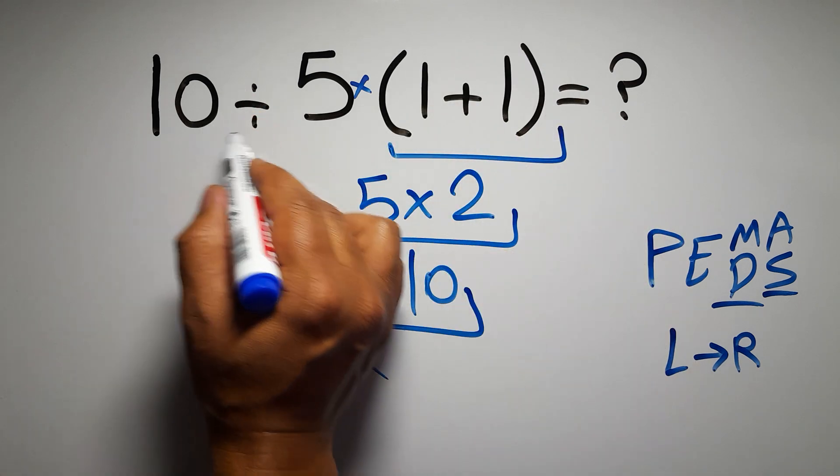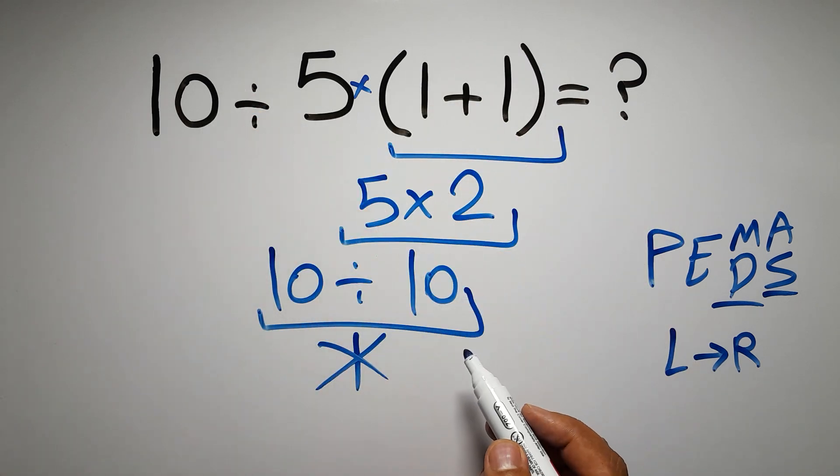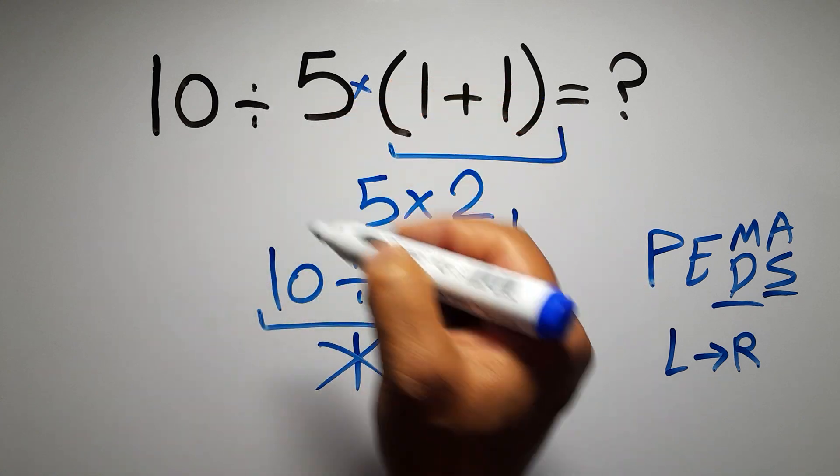So according to the PEMDAS, first we have to do this parentheses, then this division, and finally this multiplication. If we do this multiplication before this division, it is wrong.